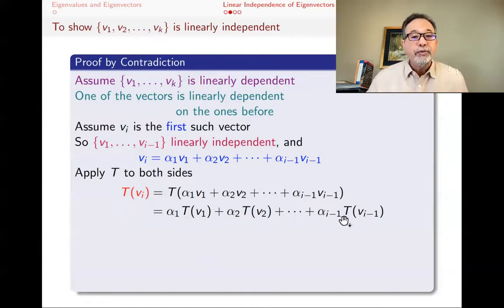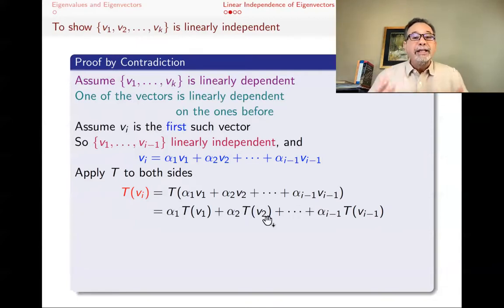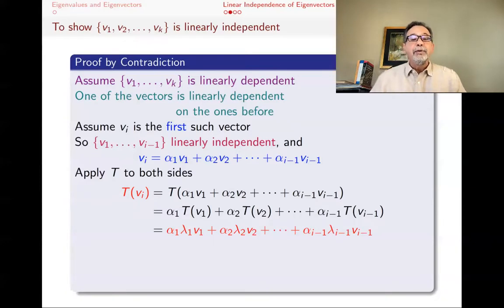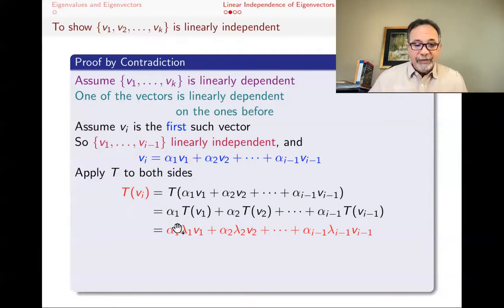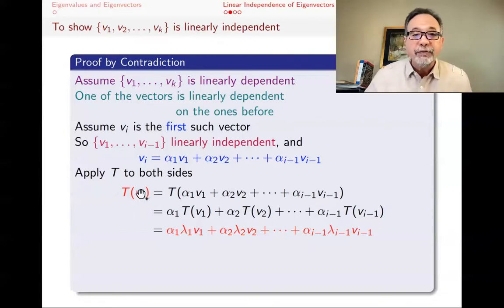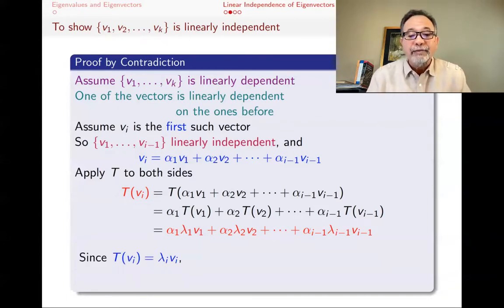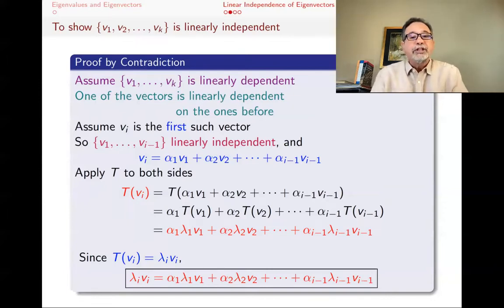Now we remember that V_1 through V_{i-1} are eigenvectors, so T(V_1) = lambda_1 * V_1, T(V_2) = lambda_2 * V_2, and so on. So T(V_i) = alpha_1 * lambda_1 * V_1 + alpha_2 * lambda_2 * V_2 + ... + alpha_{i-1} * lambda_{i-1} * V_{i-1}. But V_i itself is an eigenvector, so T(V_i) = lambda_i * V_i as well. We'll keep this relationship and come back to it.